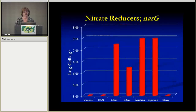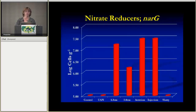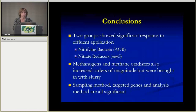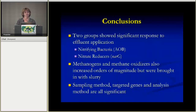We also saw a lot of difference in whether we sampled at 1.3 centimeters or 5 centimeters in all of these treatments, showing that you can't just always measure at a fixed depth — it really depended on the treatment. The basic conclusions from the microbial analysis are that there were two groups that responded a lot to slurry application: nitrifying bacteria and nitrate reducers. These are the organisms that are the key to the changes that you see happening because of manure application.